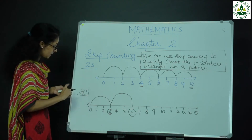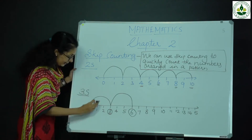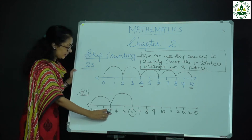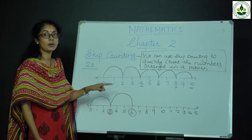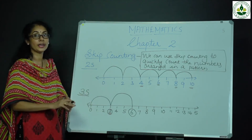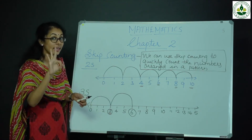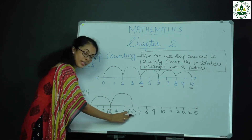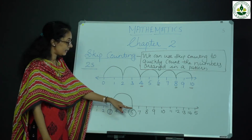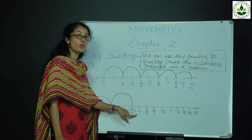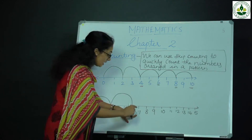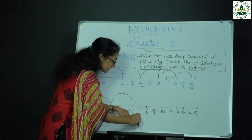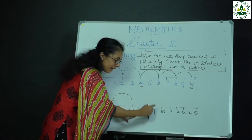Counting 3 times: 1, 2, 3. Then again 3 times: 1, 2, 3 — number 6. Then again count 3 times: 1, 2, 3 — that's 7, 8, 9.